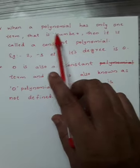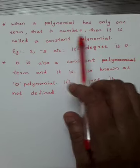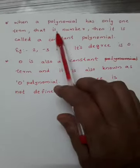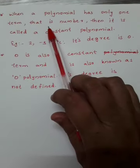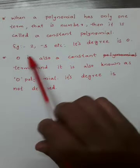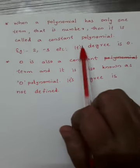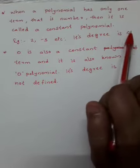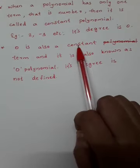The next point: when a polynomial has only one term and that term is a number, it is called a constant polynomial. For example, 2 or -3. There is no variable, so its degree is 0. The number 0 is also a constant term, so it is also a constant polynomial.